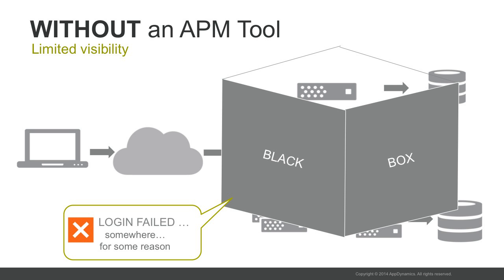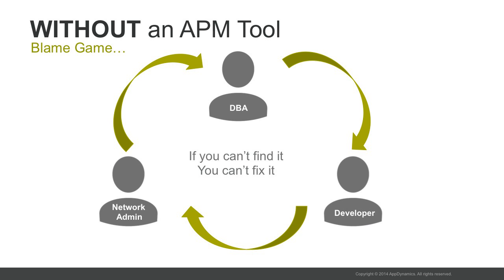Without an APM tool, the data center is a black box. There is no way to tell where failed transactions fail or where slow transactions spend their time — which servers, which classes, which methods, which network links, which backend systems. If you can't find the problem, you won't be able to get anyone to fix it. Then you enter the grand blame game of developers, network administrators, and database administrators all pointing fingers at each other.